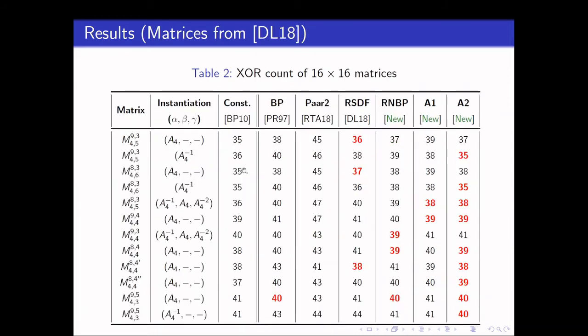Next, we also ran our algorithms on the matrices from Duval and Laurent. These matrices are specially crafted MDS matrices, which focus on reducing the amount of XOR gates required for them. In this table, we show the amount of XOR required for the construction, as well as the other algorithms. For a fair comparison, we are not comparing our algorithms with the construction cost, as the construction is specialized to each individual matrix. However, interestingly, A2 has managed to get a lower XOR count for some of the matrices as compared to the construction cost.